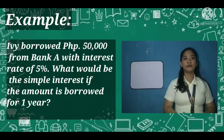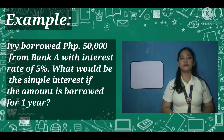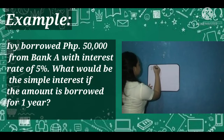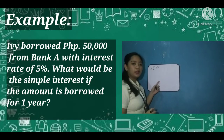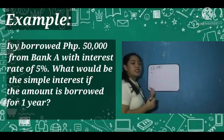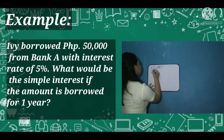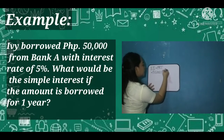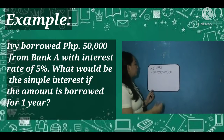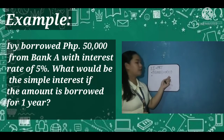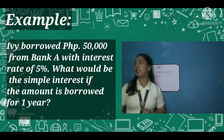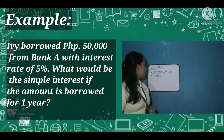Ivan, can you read example number 1? We can calculate this using the simple interest formula: SI equals P times R times T. The principal is 50,000, times the rate of 0.05 or 5%, times one year. So 50,000 times 0.05 equals 2,500. The simple interest of 50,000 with an interest rate of 5% in one year is 2,500.